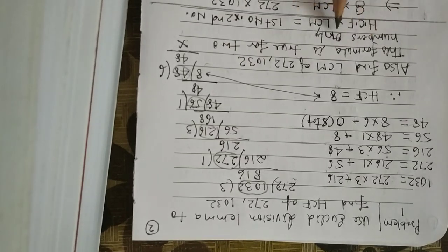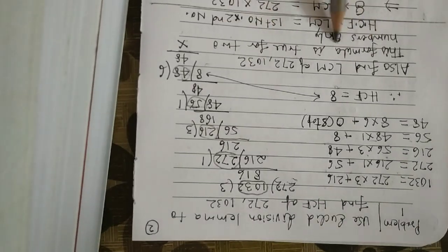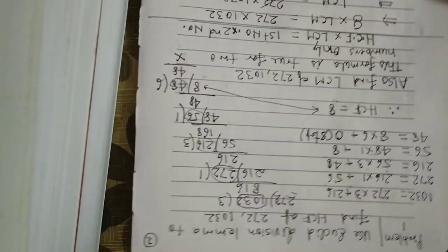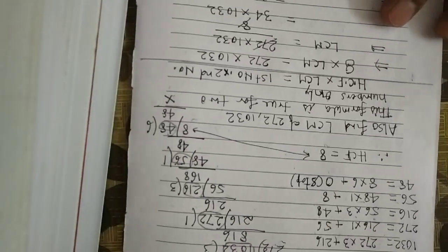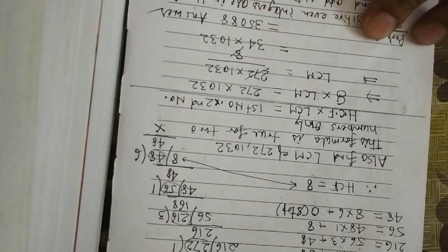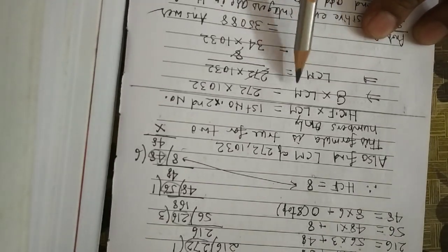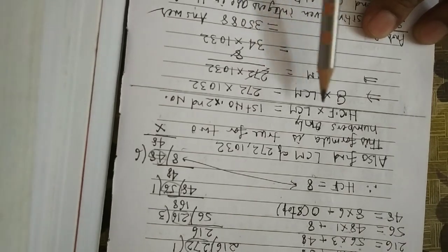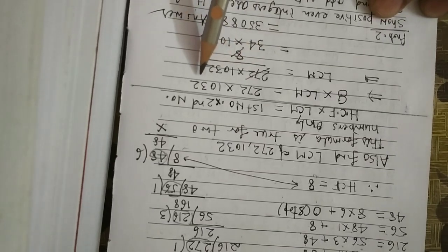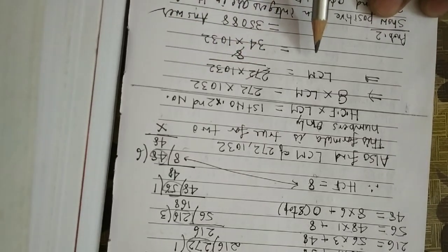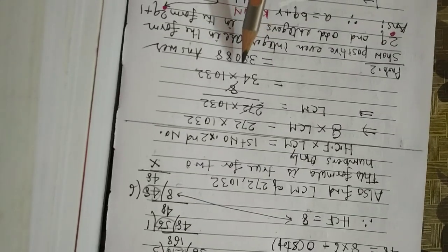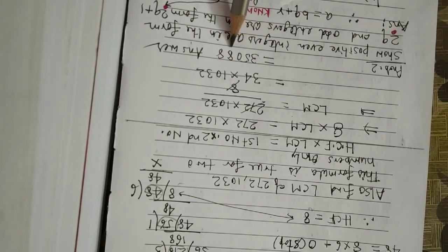Now also find the LCM of these two numbers. Remember this very important formula, strictly true for two numbers: HCF × LCM = first number × second number. This implies 8 × LCM = 272 × 1032. So LCM = 272 × 1032 ÷ 8 = 34 × 1032 = 35,088.